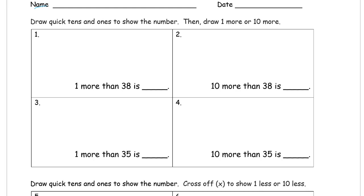One more than 38 — here's how it's going to look. Drawing the quick tens to show the number, so we draw 38. That's three tens and eight ones: one, two, three, four, five, six, seven, eight. And then we need one more. One more than 38 is 39.